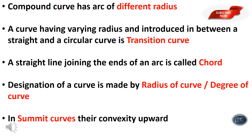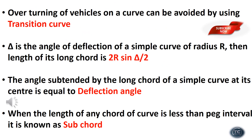The transition curve involves arcs of different radius — it has a varying radius and is introduced between the straights and circular curves. The designation of a curve is made by the radius of the curve or the degree of the curve. In summit curves, the convexity is upward.